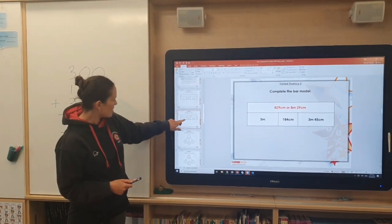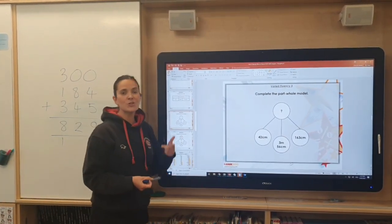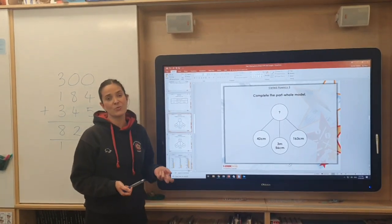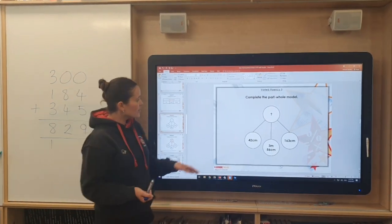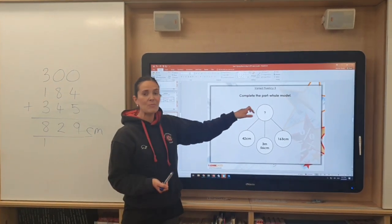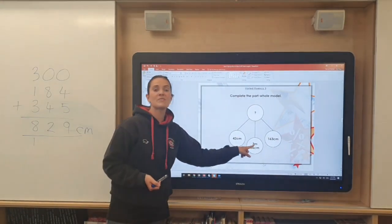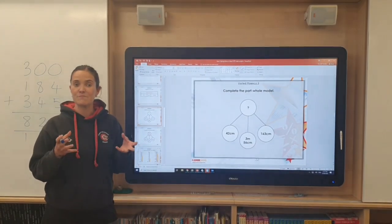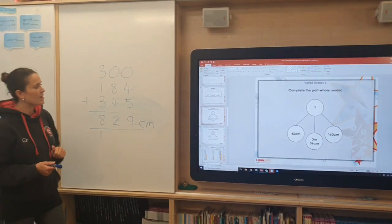The next example here is very similar. We call these part-whole models. Again, you would have come across this in Year 2 and we have worked on them in Year 3 as well. It works in exactly the same way. To find this missing number here, we need to add up the numbers that we have in those bottom circles, making sure that we are adding them up in the same units of measure, like with this example. And when you add everything up, you will get to this number here at the top.